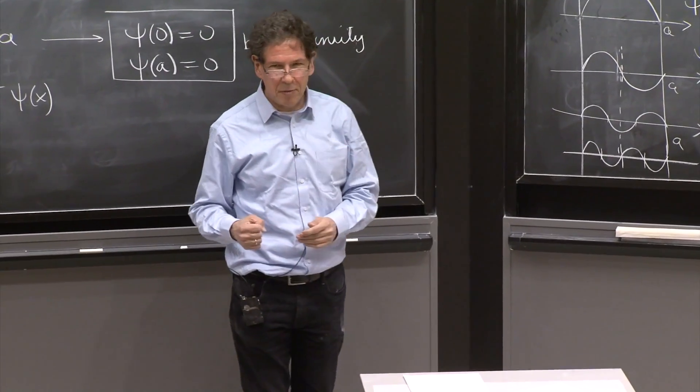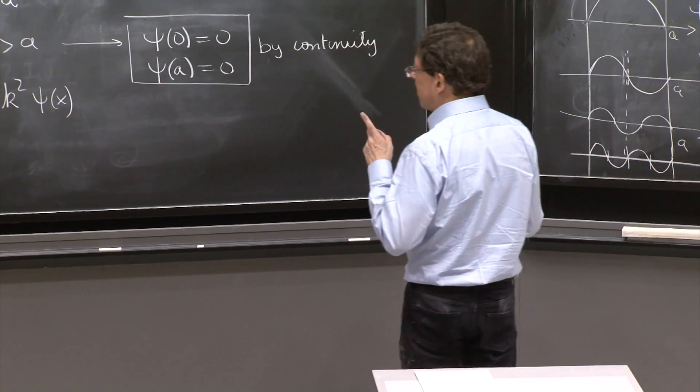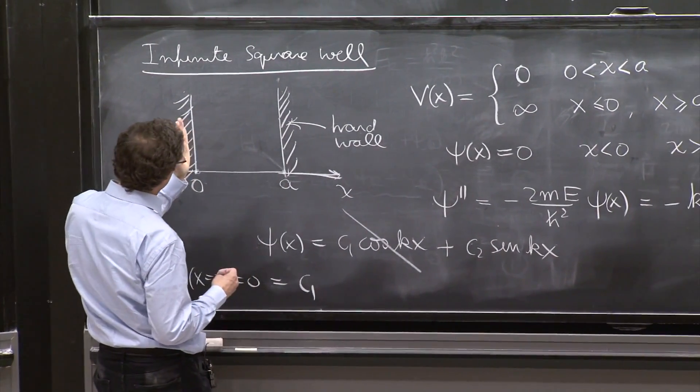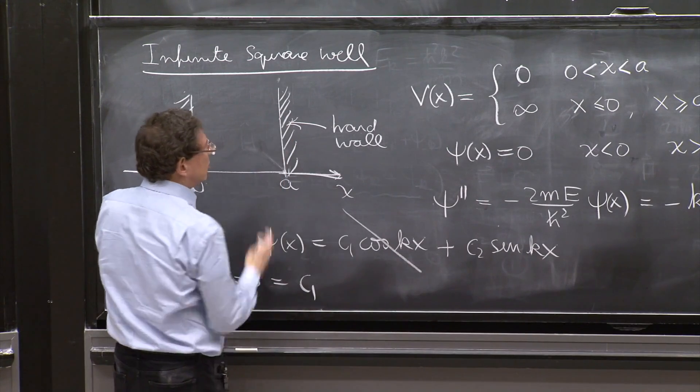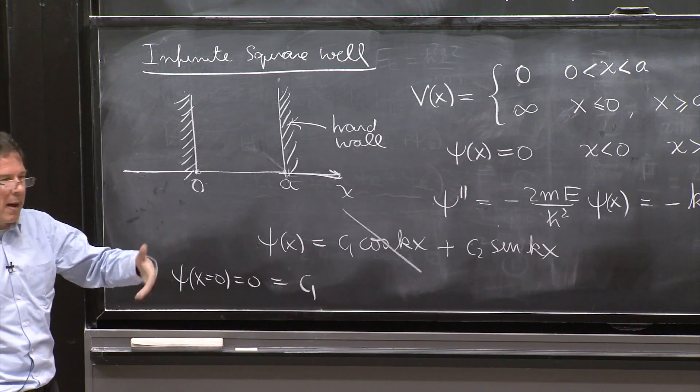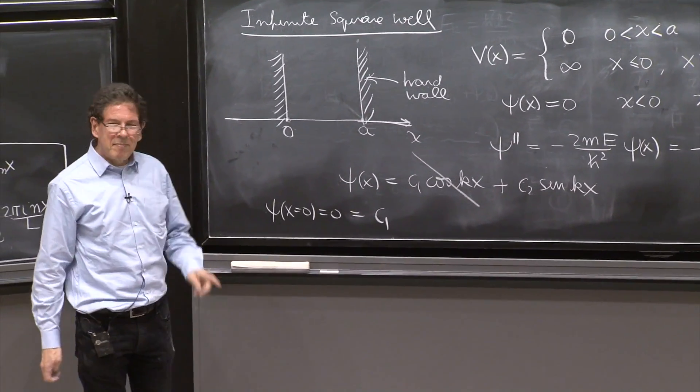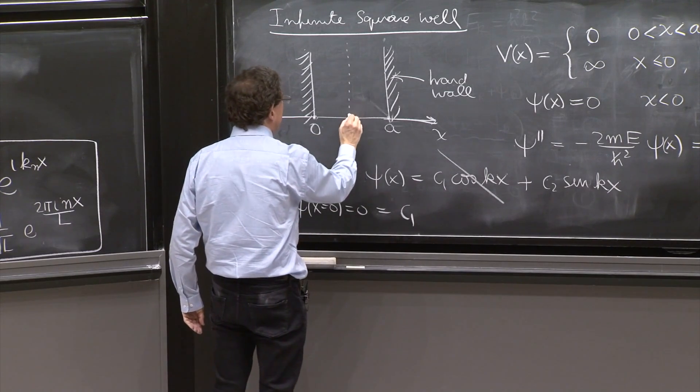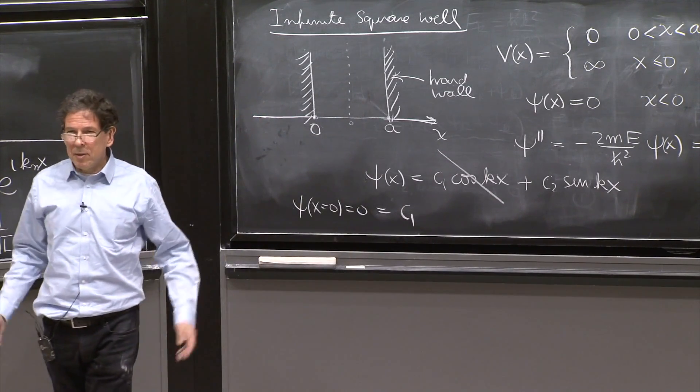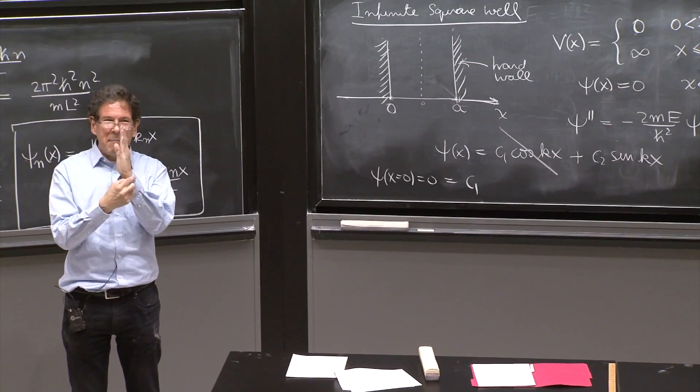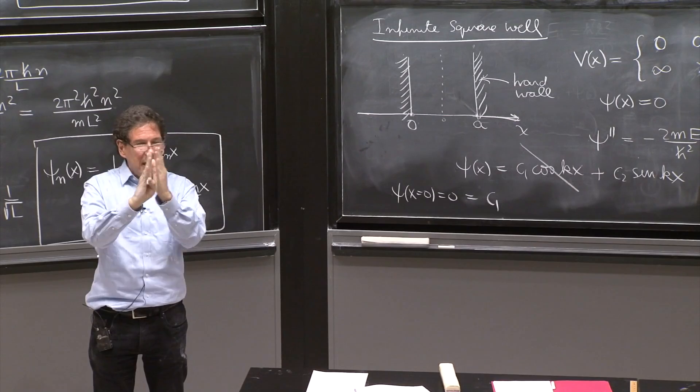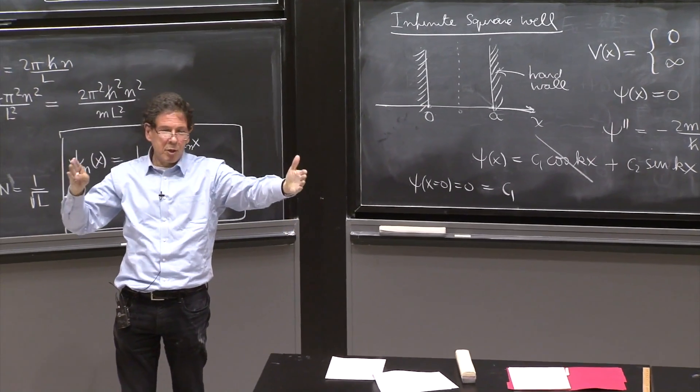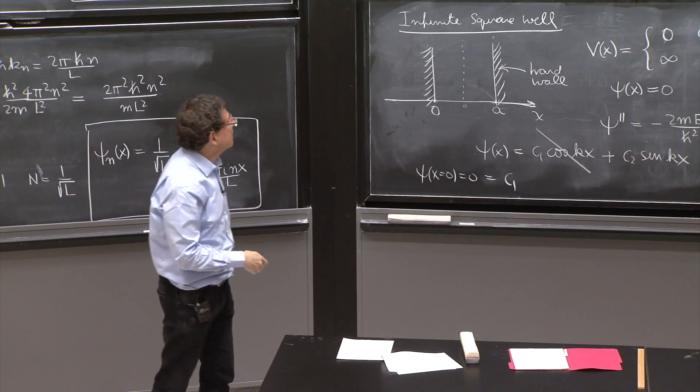The other thing I want to comment on that is extremely important is the issue of symmetry. This potential for simplicity to write everything nicely was written from 0 to a. So all the wave functions are sine of nπx over a. But in some ways, it perhaps would have been better to put the 0 here. And you say, why? What difference does it make? Well, if you have a 0 at the middle of the interval, the potential and the domain of the wave function are symmetric with respect to x going to minus x.